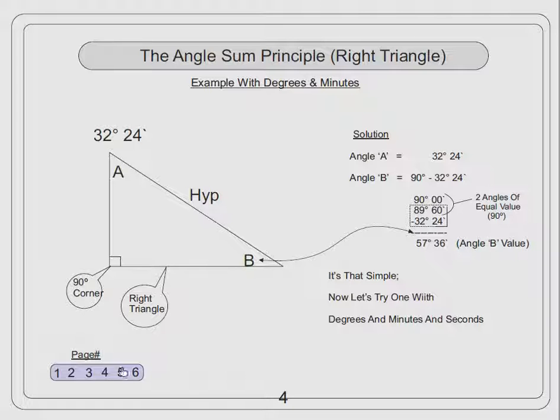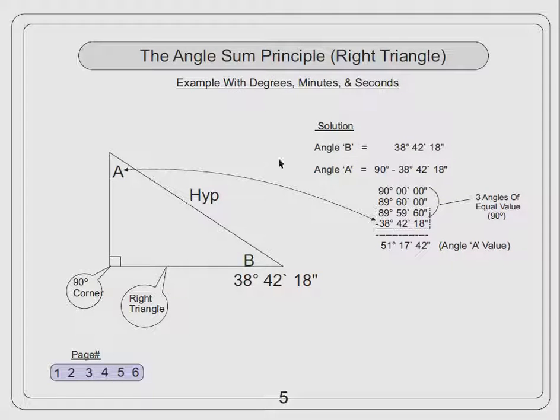Now we go up one more notch in difficulty, and we add degrees, minutes, and seconds. This time angle A is the unknown value, and angle B is the given value. We restate the fact that angle B, the given angle, is 38 degrees, 42 minutes, 18 seconds.